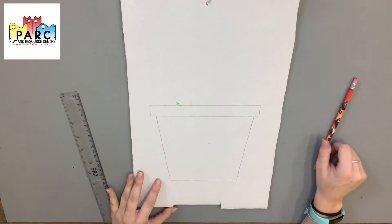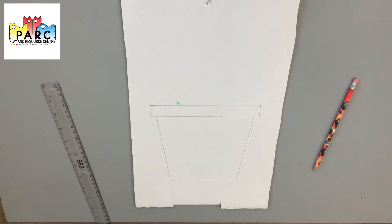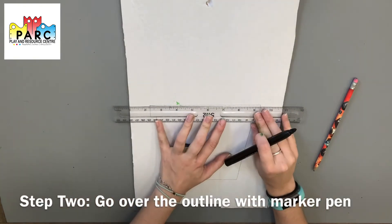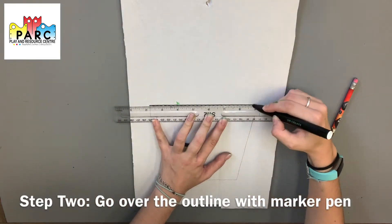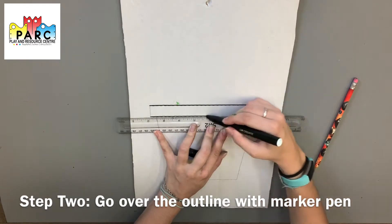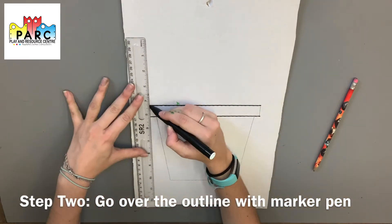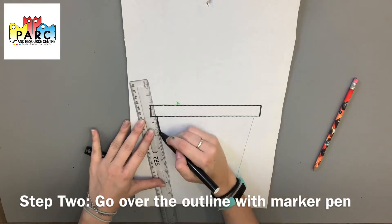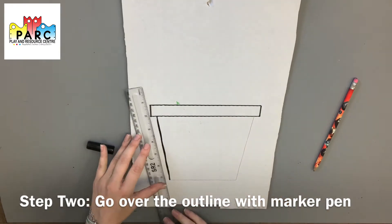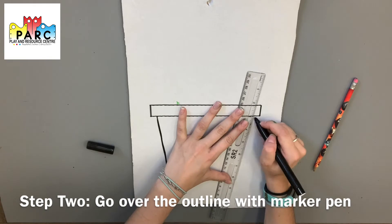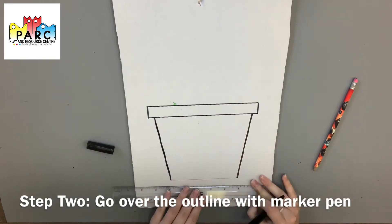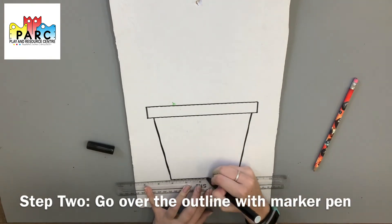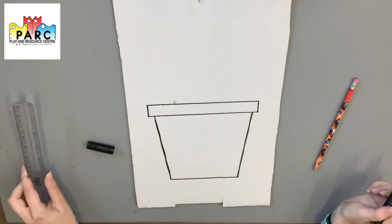Okay, so now I've finished the outline in pencil, I'm going to go over it with a black marker pen. Okay, so that's my pot done, it's now time to decorate it.